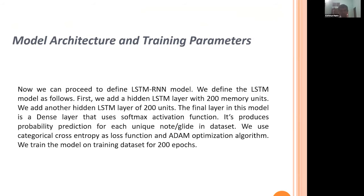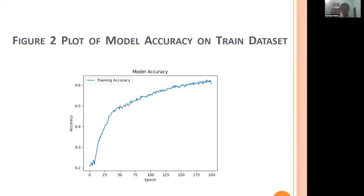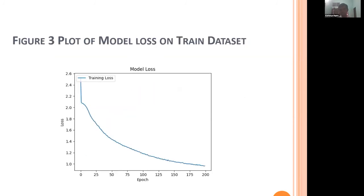We discuss the model architecture and training parameters. We have two layers, each with 200 cells of LSTM layers. We use categorical cross-entropy as the loss function and the Adam optimization algorithm for speed. We train our model for 200 epochs. We achieve a training accuracy of 60% and training loss of 0.9663, with top-one accuracy of 51.43% and top-three accuracy of 81.21% on the test set. This is the plot of model accuracy and the plot of model loss on the training dataset.